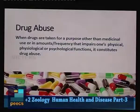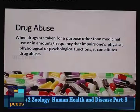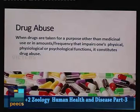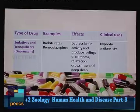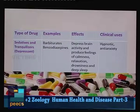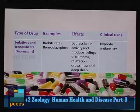Drug abuse occurs when a drug is taken for a purpose other than medicinal use, or in an amount or frequency that alters a person's physical, physiological or psychological functions. Drugs are classified into different types: sedatives, opioids, stimulants, and hallucinogens. We will identify each type, their effects and their clinical uses.